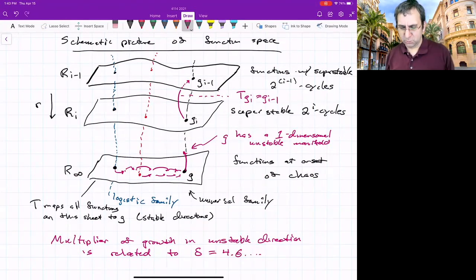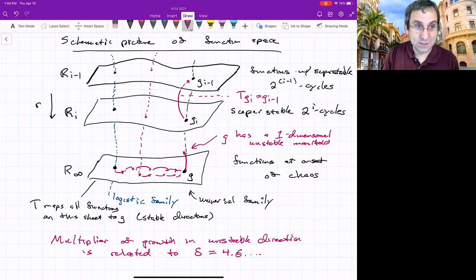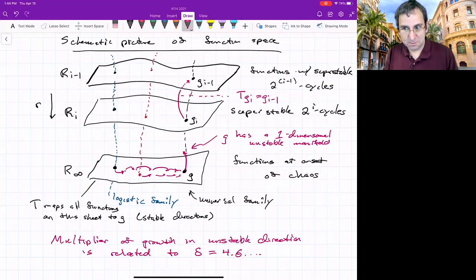Think of what we've said delta represents, the distance between these super stable cycles or distance between period doublings, as you approach g. So very close to g, like g_1 billion going to g_1 billion minus 1. The multiplier of growth is related to delta. So that's a sketch of where delta comes from.